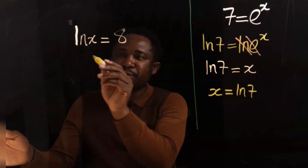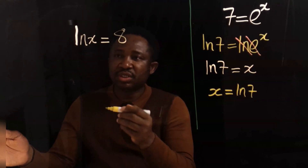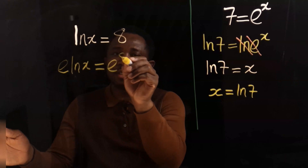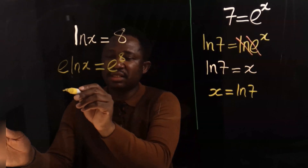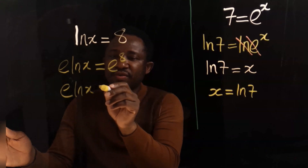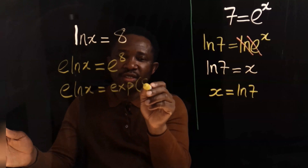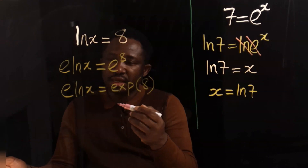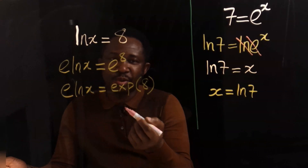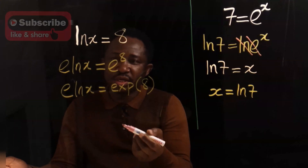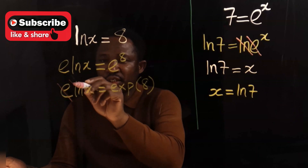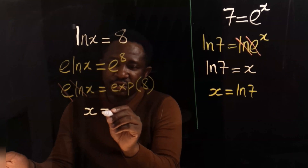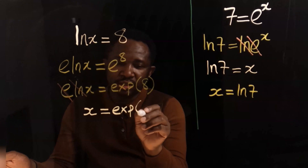We are going to introduce exponential because exponential will neutralize natural log. Hence, we are going to take the exponential of both sides. That is, exponential of the natural log of x equals exponential of 8. Natural log very close to exponential — they neutralize each other. x is now released and our answer is exponential 8.